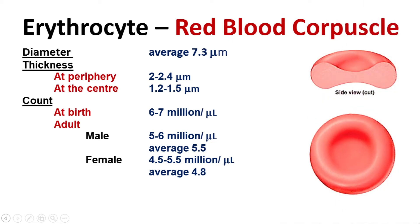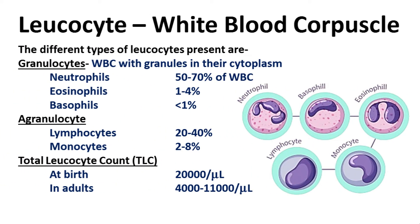The diameter of RBCs is about 7.3 micrometers. In terms of thickness, at the center it is 1.2 to 1.5 micrometers and 2 to 2.4 micrometers at the periphery. RBC count at the time of birth is about 6 to 7 million per microliter. In adult males it is 5 to 6 million per microliter, and in adult females it is 4.5 to 5.5 million per microliter.